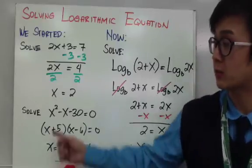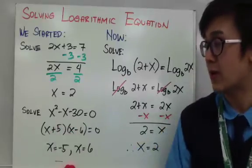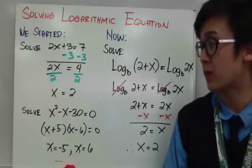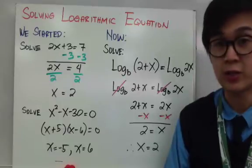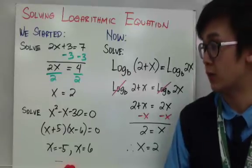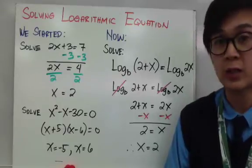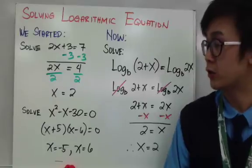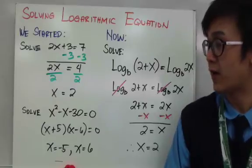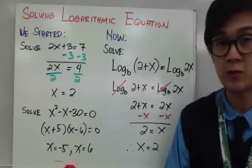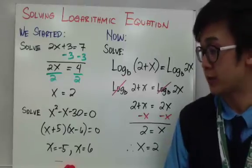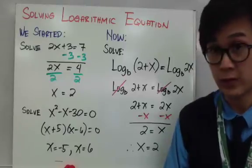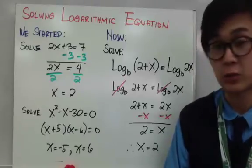For a quadratic equation, we have x squared minus x minus 30 equal to 0, and we know that quadratic equation is factorable. To factor it, we have x plus 5 times x minus 6 equal to 0, and using the zero product property, x is equal to negative 5 and x is equal to 6.